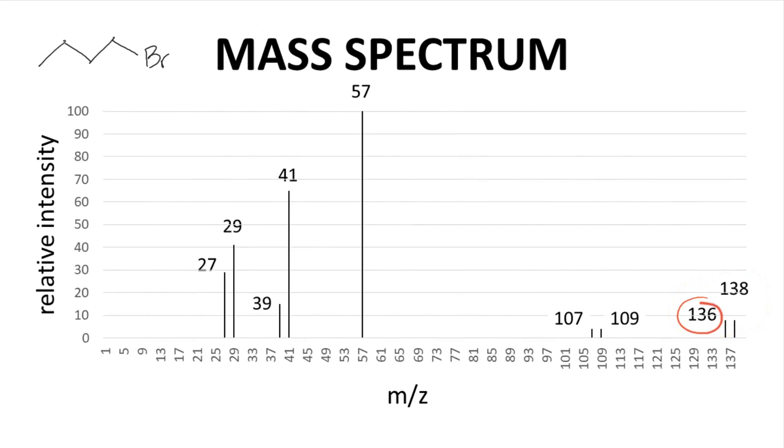One at 136 and another at 138. The molecular mass of 1-bromobutane is 137 grams per mole. So 136 and 138 are close, but not quite right.